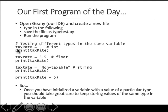The next line is tax_rate equals 5. This line defines 5 as an integer and puts it in this variable. So you define a variable called tax_rate and give it a value of 5.